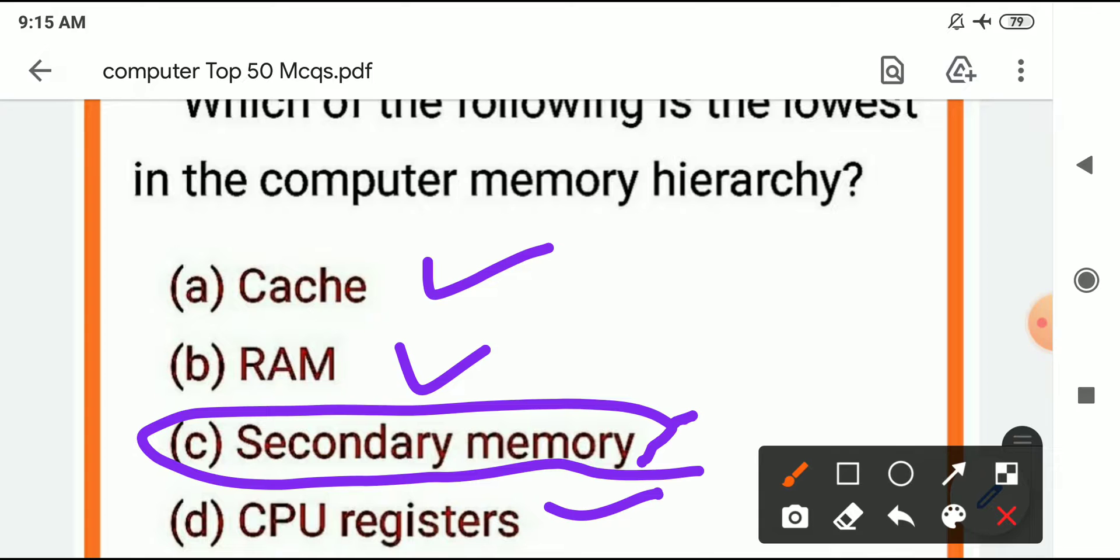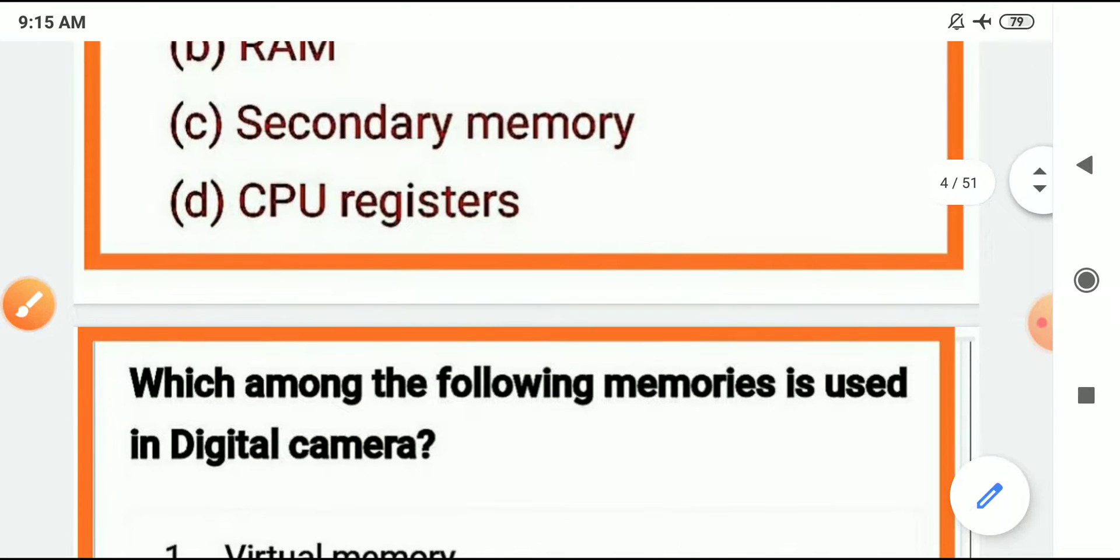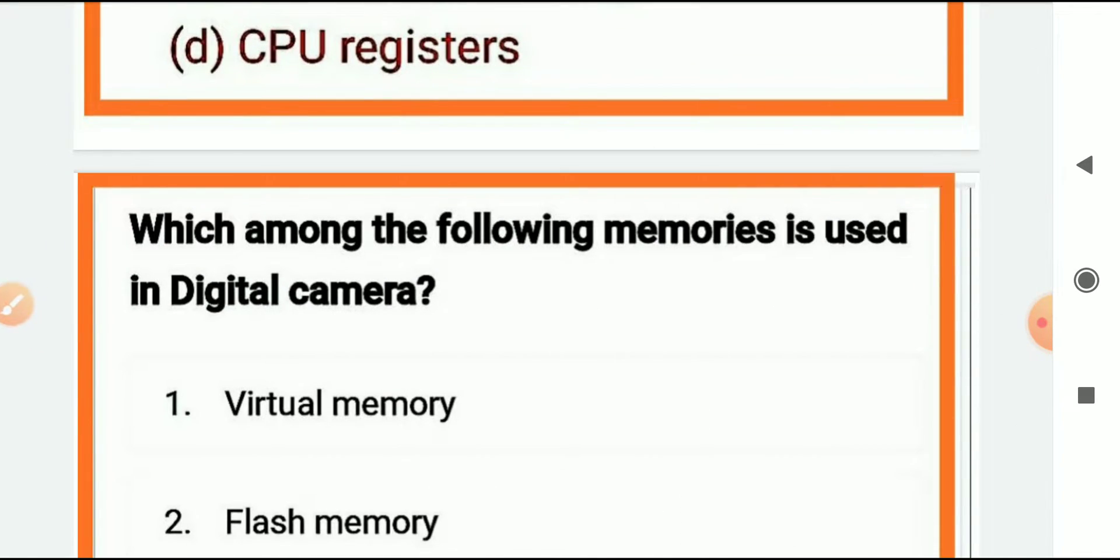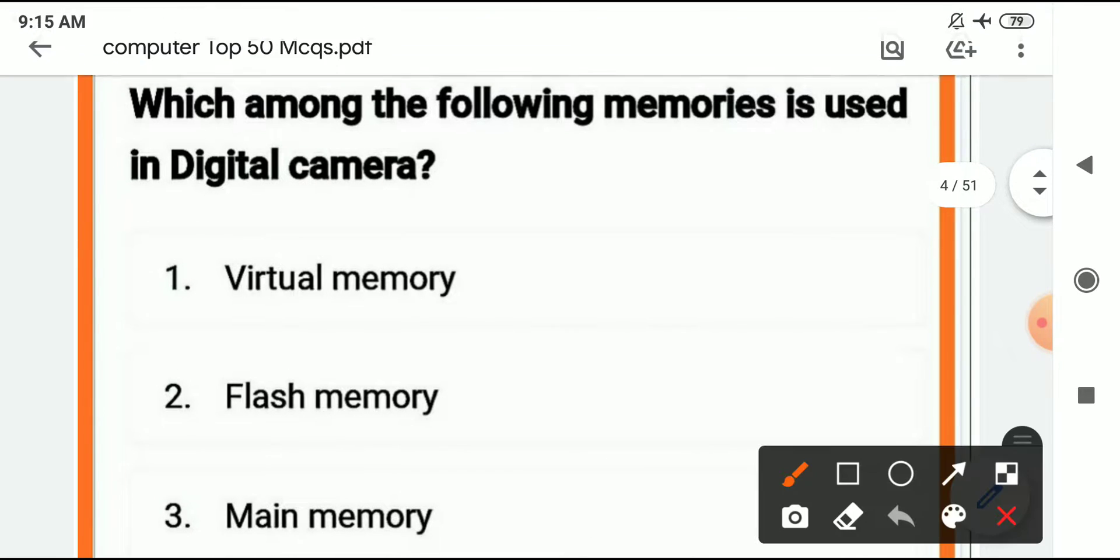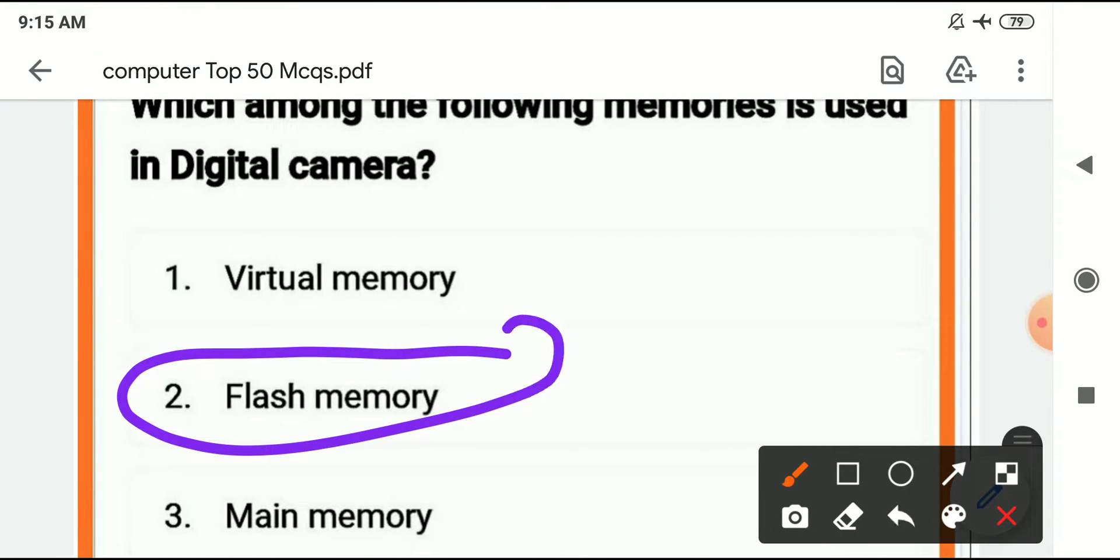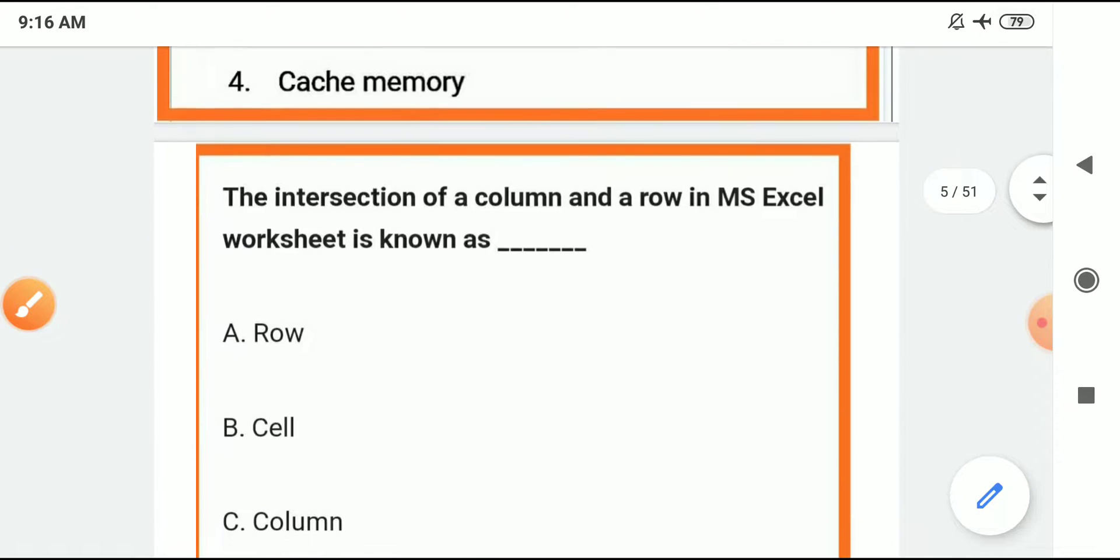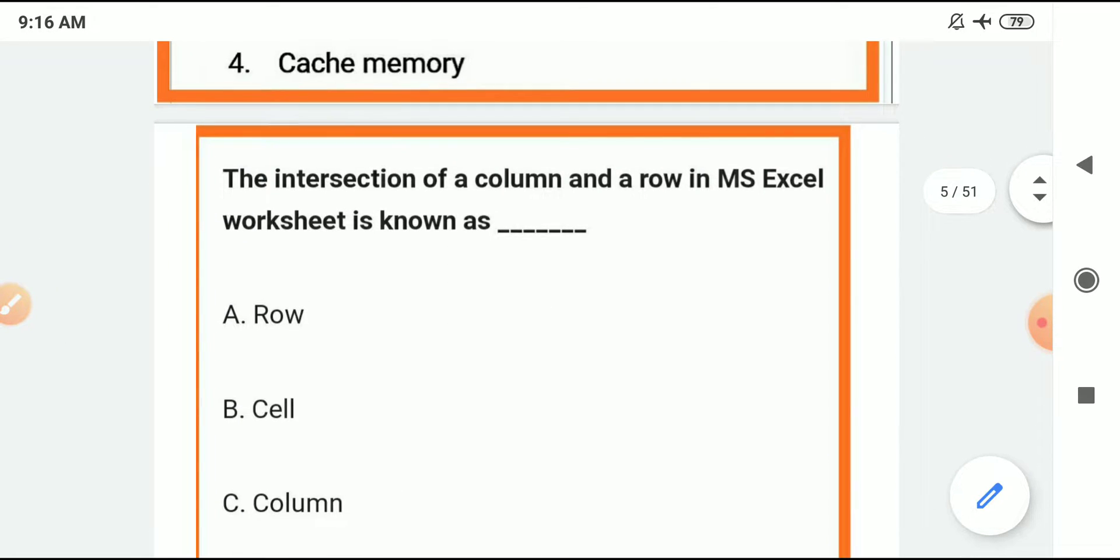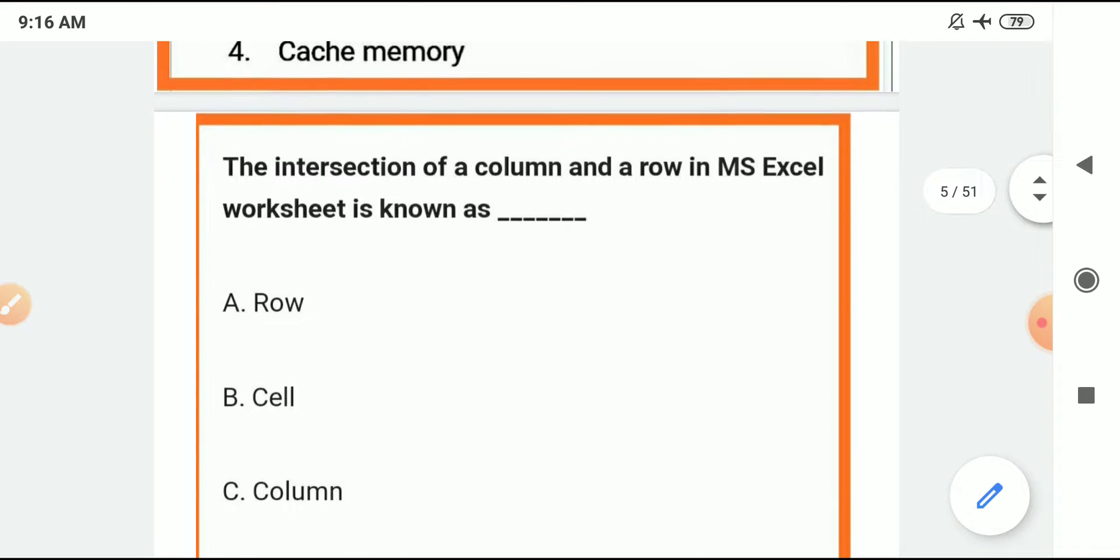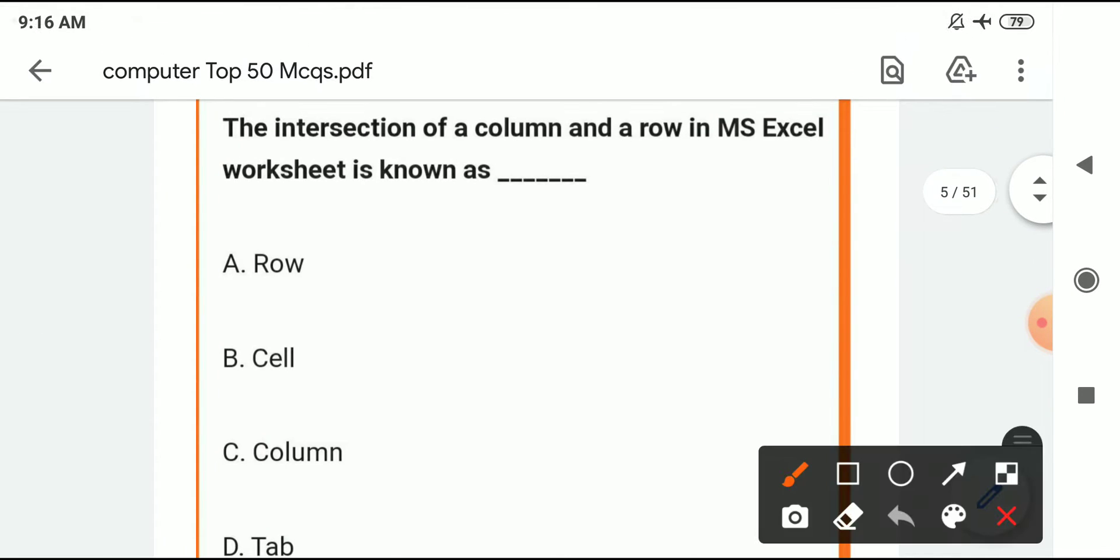Memory is used in digital camera. The next is the intersections of the column and rows in MS Excel worksheet is known as - the intersection of row and column, that is cell.